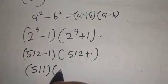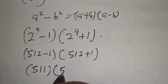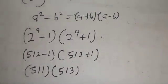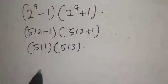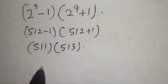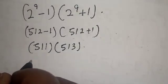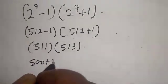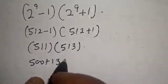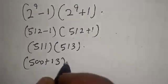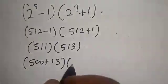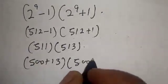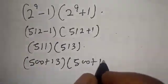512 minus 1 is 511, multiplied by 512 plus 1 which is 513. Now this is the same thing as (500 + 13) multiplied by (500 + 11).